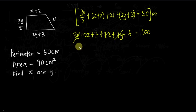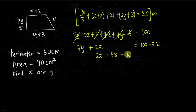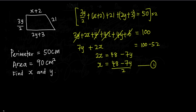Join the y terms together to get 7y. Join the numbers together — 4 + 42 + 6 = 52 — so it's 100 minus 52, leaving a plus 2x. You can make x or y the subject; it doesn't matter. I'll make x the subject, which seems easier. This gives 48 minus 7y, so x equals (48 minus 7y) over 2. I call this the first equation. I used the perimeter to form one equation and simplified until x is the subject.